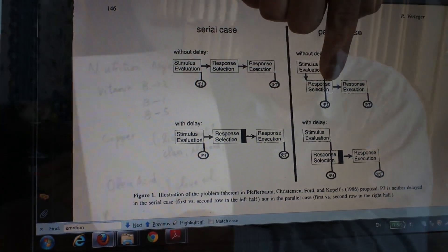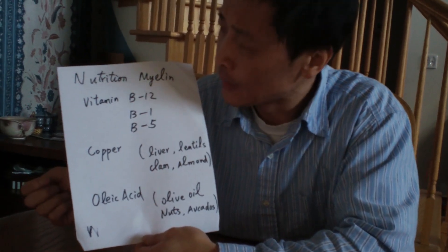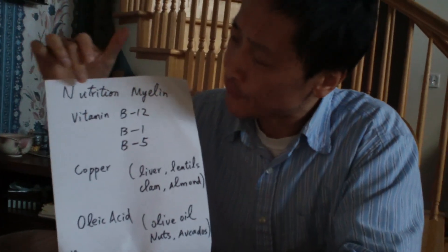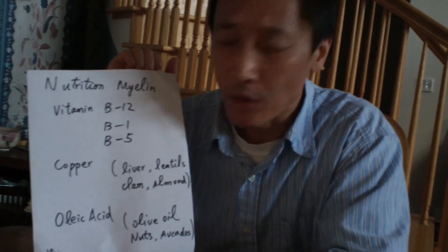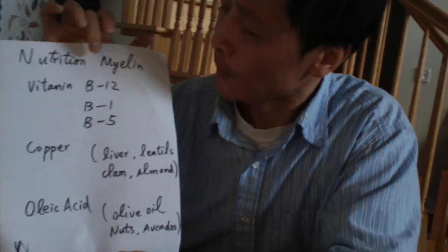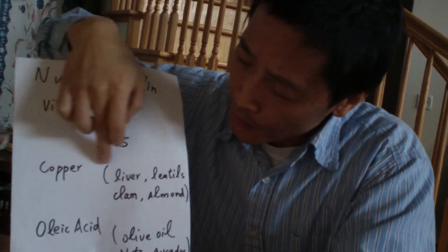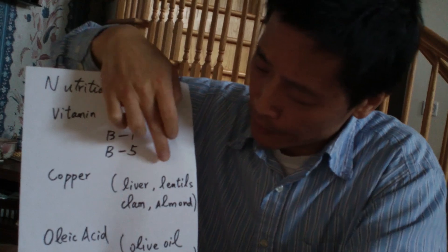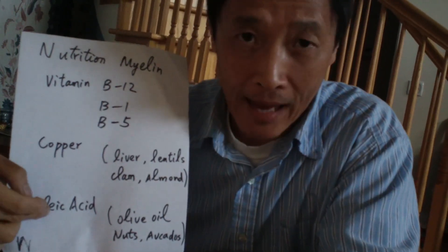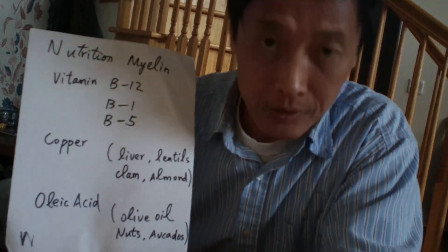Myelin can help improve your transmission speed. How do you make sure you have good myelin? There are foods that help improve nerve fiber transmission speed — not the processing part, but the conduction. These include vitamin B12, B1, B5, copper-rich foods such as liver, lentils, clams, and almonds. You also need healthy fats for nerves: olive oil, nuts, and avocado are good sources.